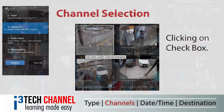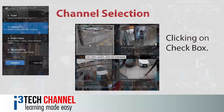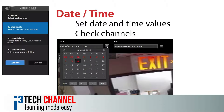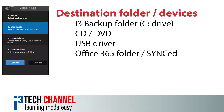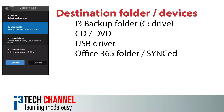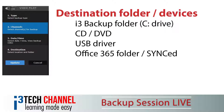The next step is channel selection, which is a simple process of clicking on the channel and checking the checkbox. Third, set the date and time for the start and end of each recording and review each channel for accuracy. Finally, select the destination folder or device. Videos can be backed up to the i3 backup folder on the C drive, a CD or DVD, a USB drive, or even an Office 365 folder which can be synced and shared.